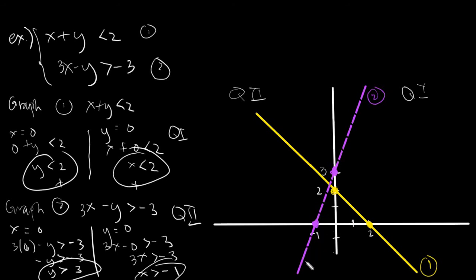So say this is a dashed line, and same goes for the violet line. A dashed line simply indicates that your line is not part of the solution — meaning, if I take a point here on the dashed line, that point is not part of the solution.